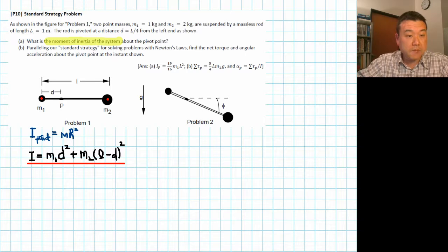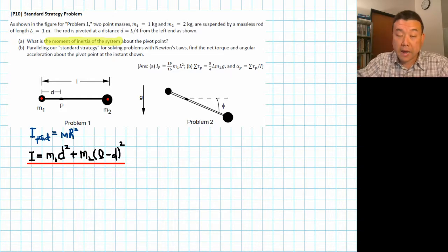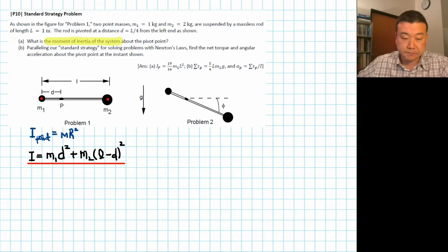So it says, paralleling our standard strategy for solving problems with Newton's laws, find the net torque and angular acceleration about the pivot point at the instant shown. All right, so we should start off with a free body diagram. Let me make some space here.